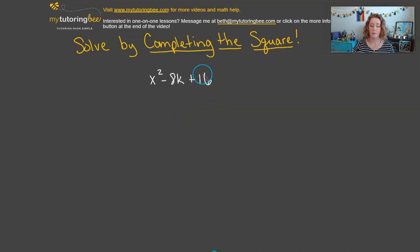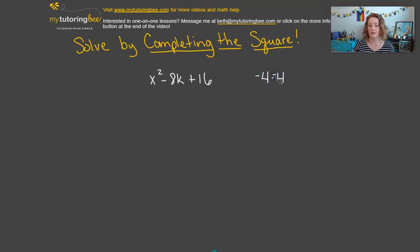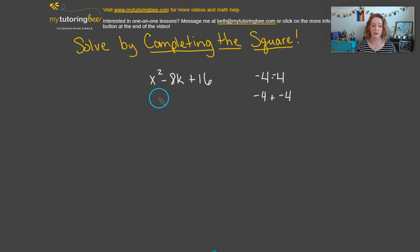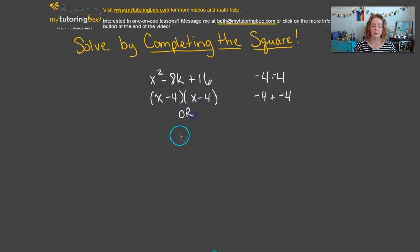For 16, what multiplies by itself to give us 16? That would be 4 times 4. We also need it to add to make negative 8, so if we make both numbers negative — negative 4 plus negative 4 gives us negative 8, and negative 4 times negative 4 still gives us positive 16. So factored into two binomials it's x minus 4 times x minus 4, which we write as x minus 4 squared.